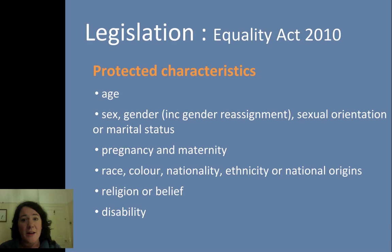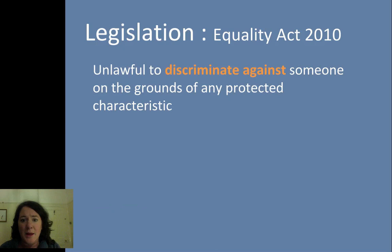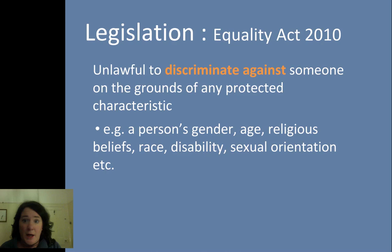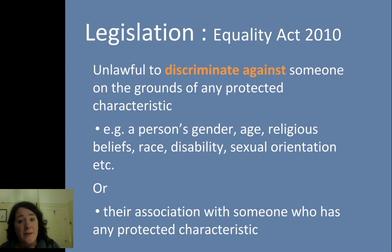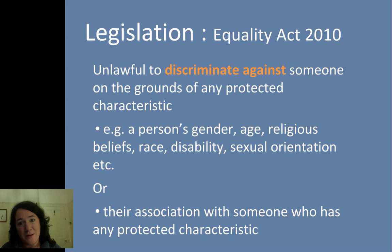It's important that we understand what this idea of discrimination means. It's unlawful under the Equality Act to discriminate against anyone on the grounds of these protected characteristics — so against someone because they're a man or a woman, because they're young or old, because of particular religious beliefs or associated customs, because of their level of disability or ability, or things like their sexual orientation. It also means it's illegal to discriminate against anyone on their association with somebody who has these protected characteristics. So if your sister is gay or your brother is a Muslim, you can't be discriminated against because of your association with these people.